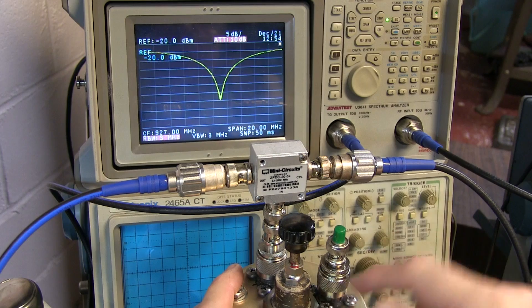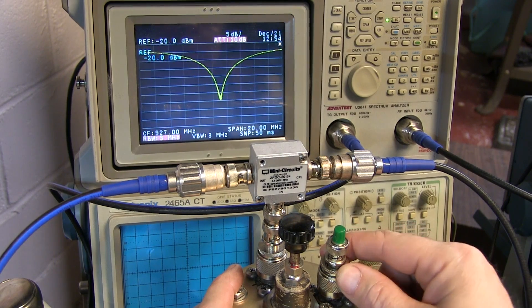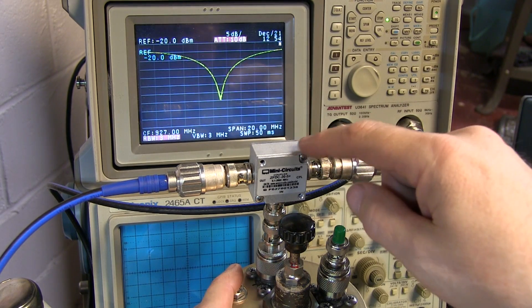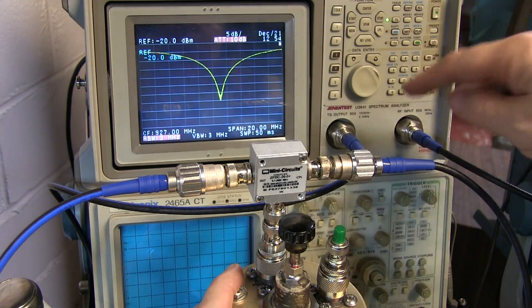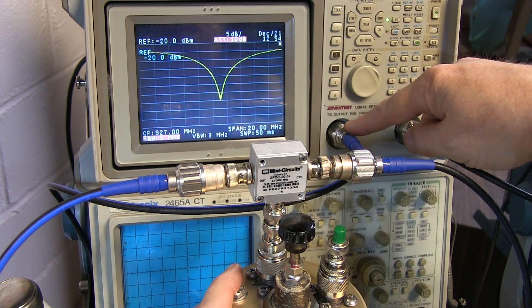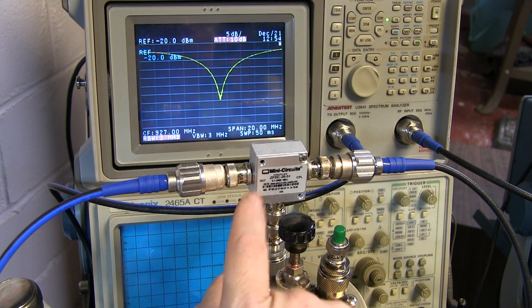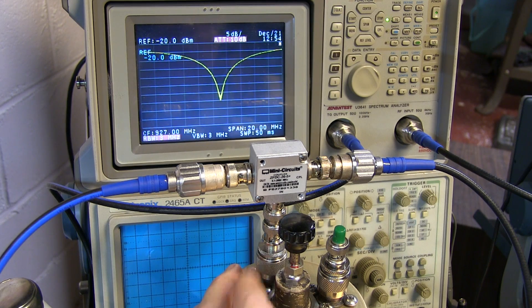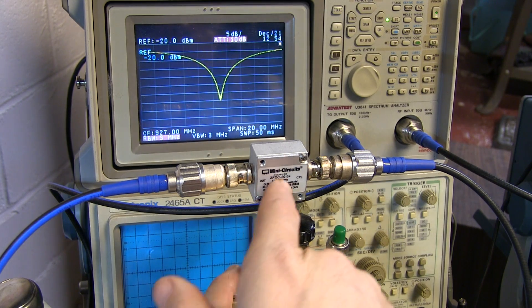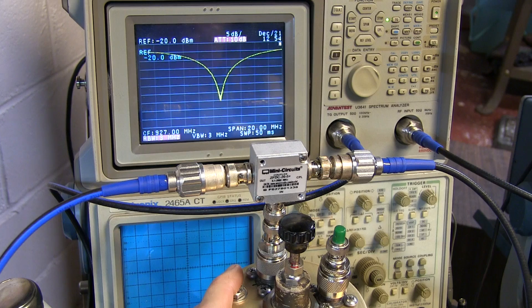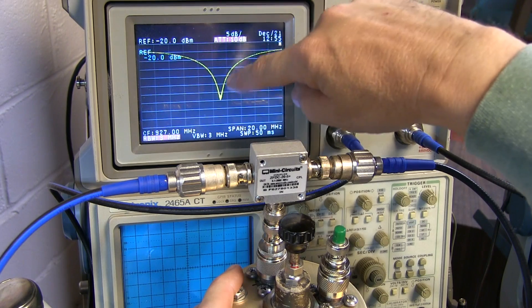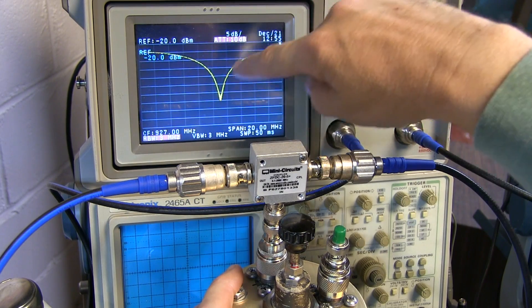I've terminated the output of our filter with a 50 ohm load, connected the spectrum analyzer input to the coupled port on the directional coupler, connected the tracking generator output to the out port of the coupler, and the in port of the coupler is connected to the filter. So the idea is any energy that's reflected back from the filter input is now going to be coupled to the output and be measured. So obviously the ideal case is not getting any energy reflected back, and that's indicated by the minimum here on our return loss plot.